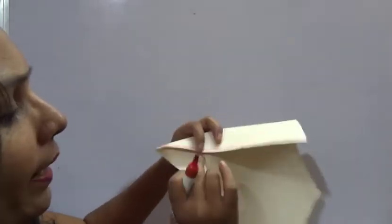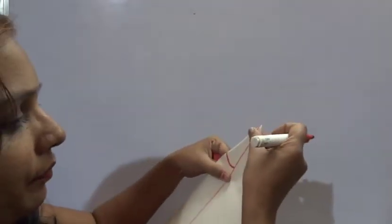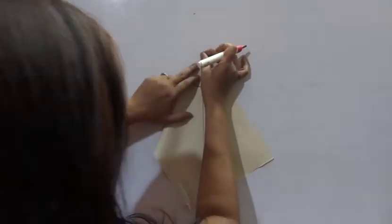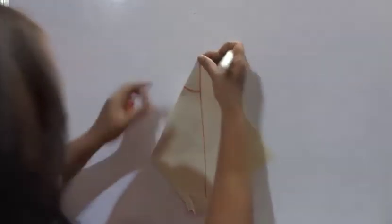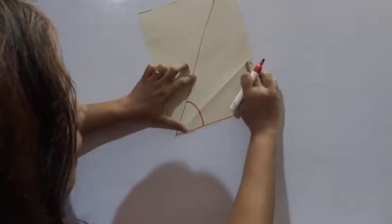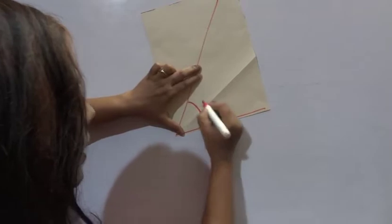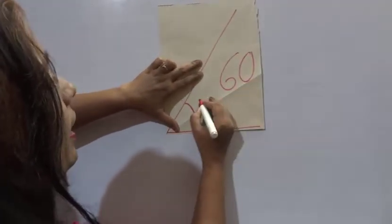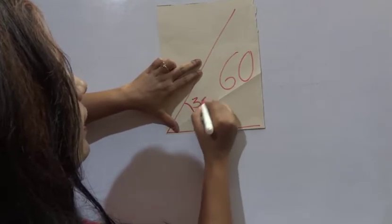Keeping these two lines one over the other, make a crease here. Now we have got this angle bisected. If suppose this angle is 60 degrees, you have 30 degrees here and 30 degrees here. This is angle bisecting.